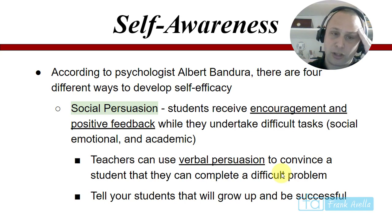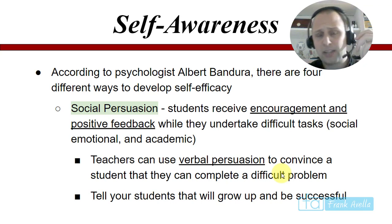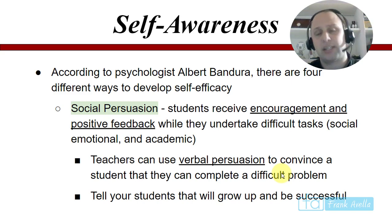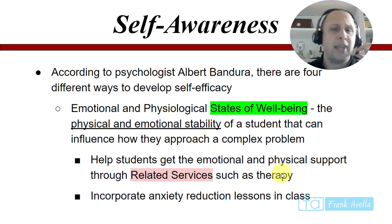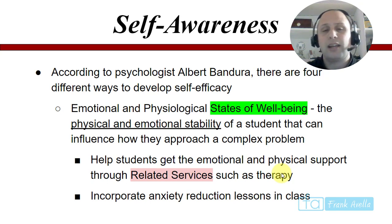Social persuasion: students receive encouragement and positive feedback while taking on difficult tasks — they can be emotional or social tasks. Teachers can use verbal persuasion to convince a student they can complete a difficult problem; talk the students through it, build up their confidence, and tell them that one day they will grow up and be successful. Help students get emotional and physical support through related services such as therapy.